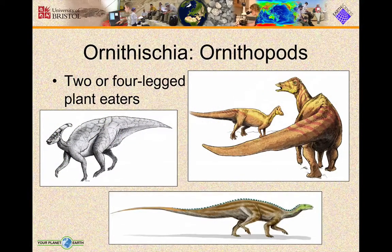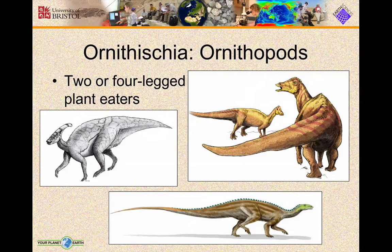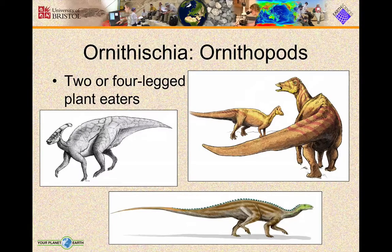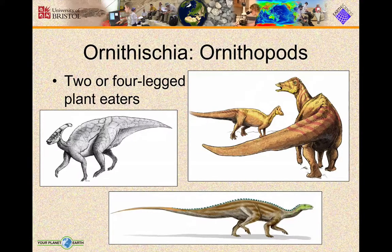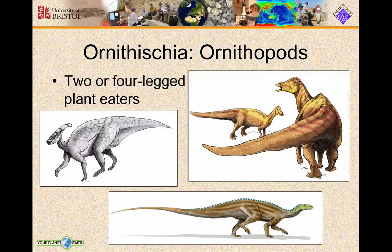If we move on to the ornithopods, this is quite a large, diverse group. They're all plant-eaters and could get around on either four legs or two legs. Some of them may even have been what we call facultative quadrupeds or facultative bipeds — they would have moved around on four legs most of the time and occasionally on two legs when the need arose. This includes really interesting dinosaurs like Parasaurolophus on the left, with its large hollow crest that we think the dinosaur could use to make noise.